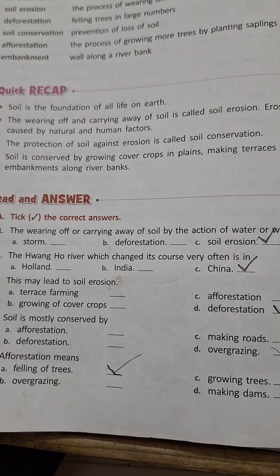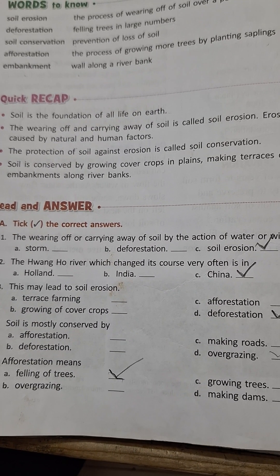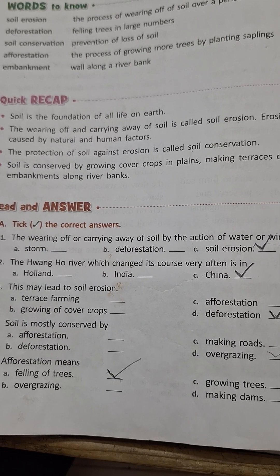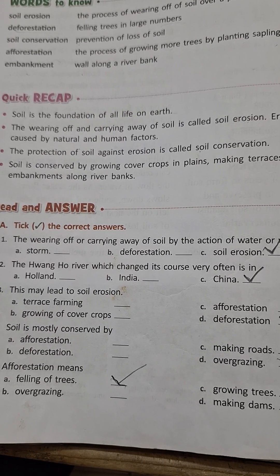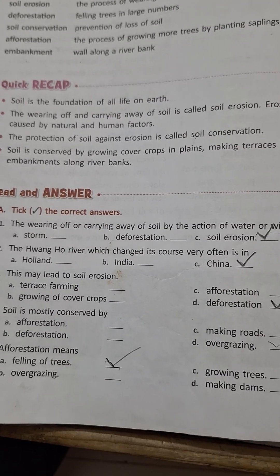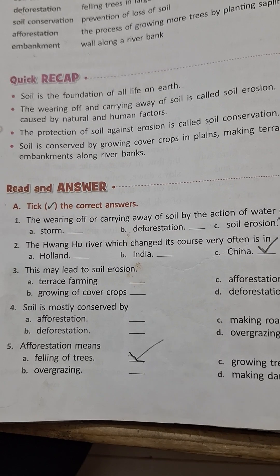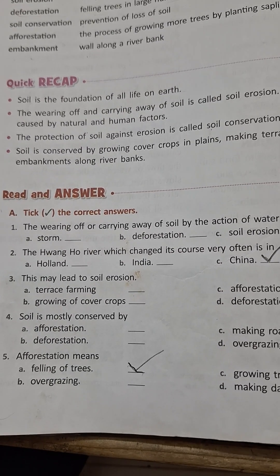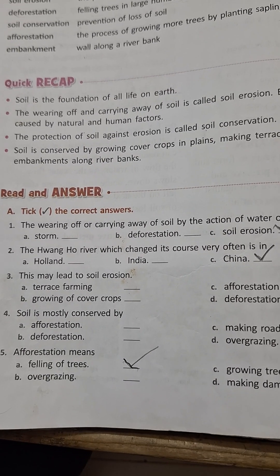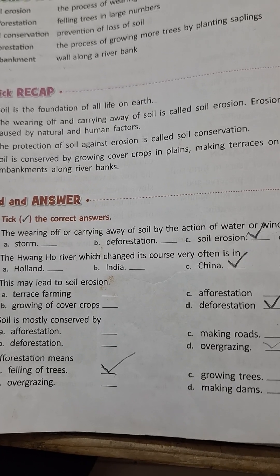Soil is mostly conserved by afforestation. Overgrazing, deforestation, and making roads cause soil erosion. Afforestation means growing trees, and it helps conserve soil.